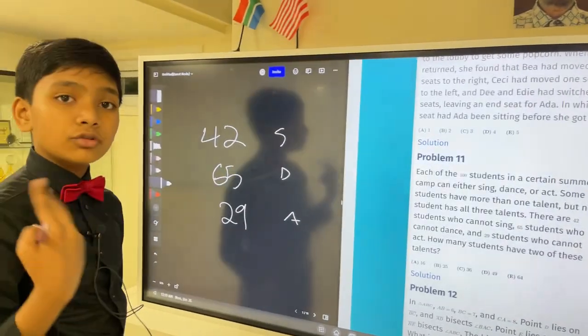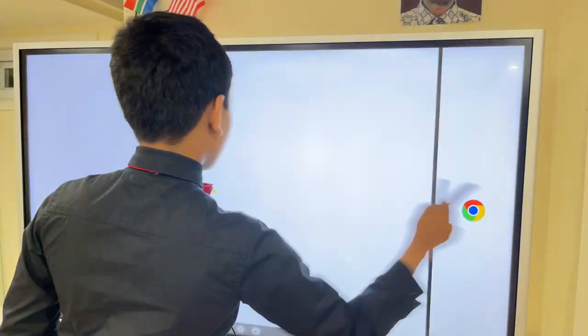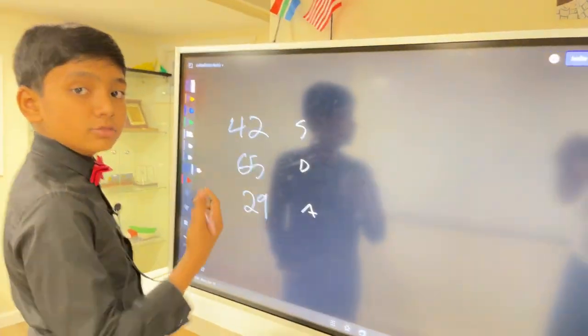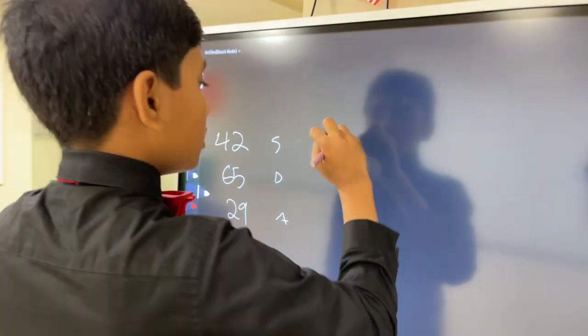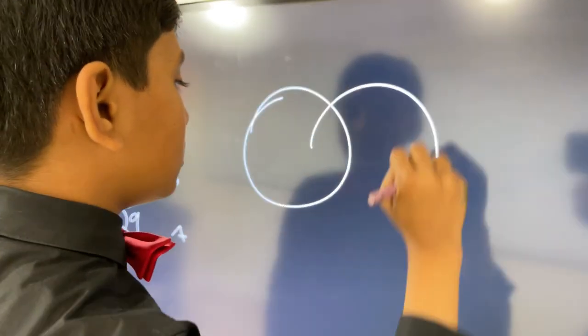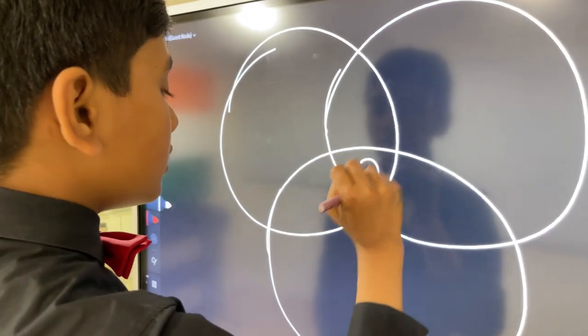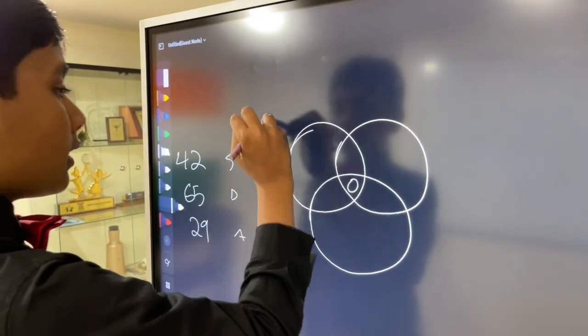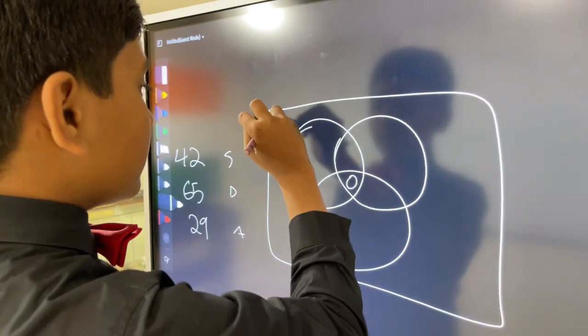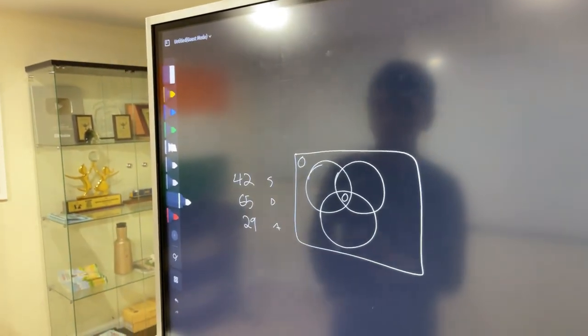How many students have two of these talents? Well, it's simple, all we have to do is use a Venn diagram. So we have 1, 2, and 3. And we know none of them have all three talents, and none of them have no talents.